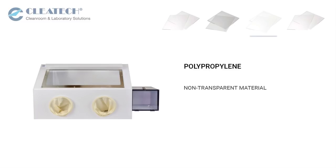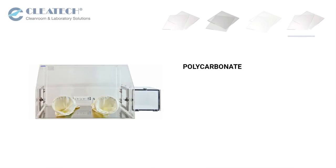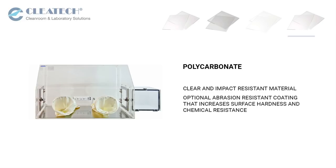Polypropylene is a non-transparent material that is resistant to corrosive chemicals and solvents such as acids and acetone. Polycarbonate is a clear thermal and impact resistant material for specific applications. We offer an optional abrasion resistant coating that increases surface hardness and chemical resistance.